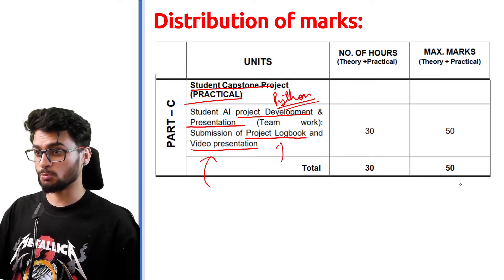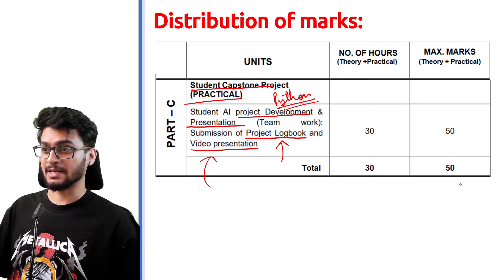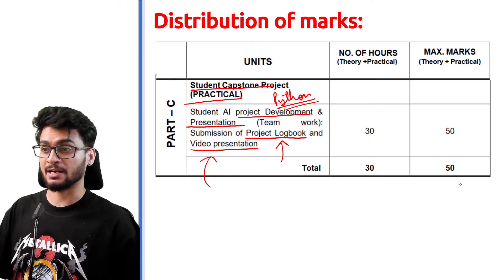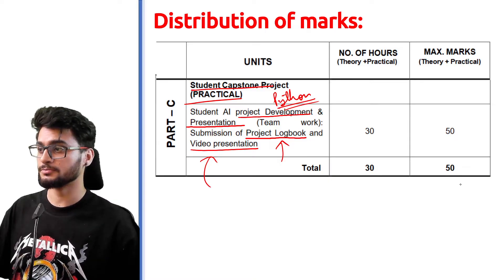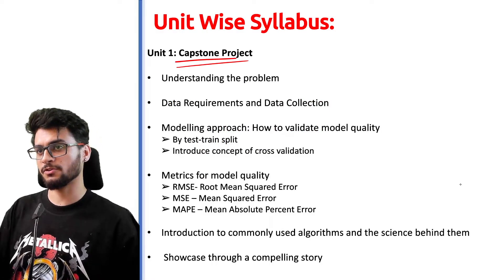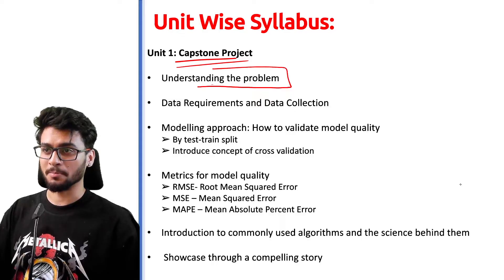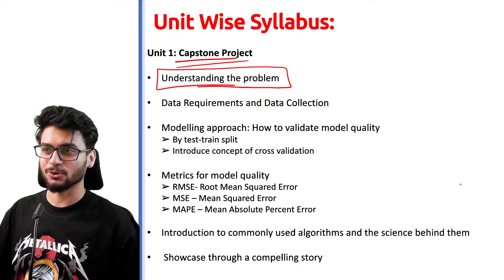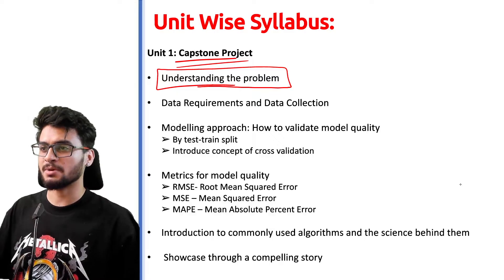In the project logbook, you will write everything from start to end — what you have done in that project and what the various stages were. First, you have to understand the problem. In the Capsule project, you will not randomly do a project; you will be trying to solve some technological or other problem with the help of AI.